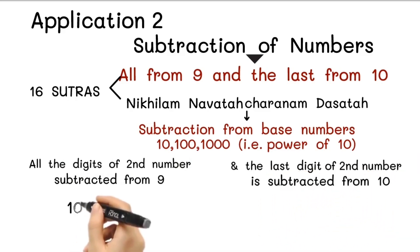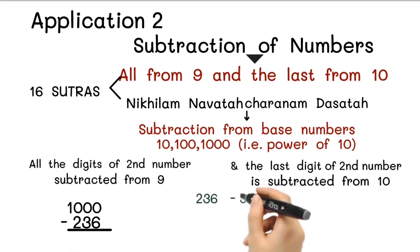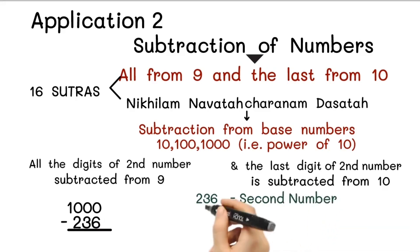Let us take an example: 1000 minus 236. Here the second number is 236. So except the last digit 6, we will subtract remaining 2 digits, 2 and 3, from 9, and 6 we will subtract from 10. So let us solve it.